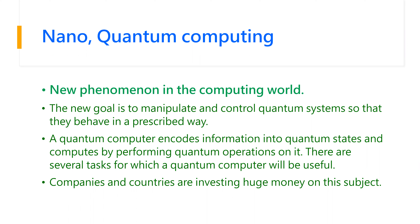Nano and quantum computing is the future — next two or three decades you are going to see this. A simple example of nano: they are going to inject a small nano machine into your veins. It goes inside your body and sees what kind of problems you have — for example, if you have a heart issue, it goes inside your heart to check whether there is a blockage, a blood clot, or fat, how much fat and what kind. It can even do some repair.